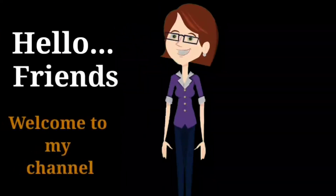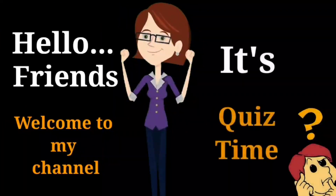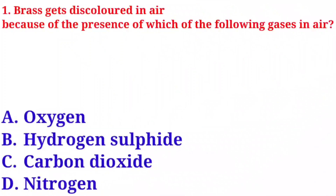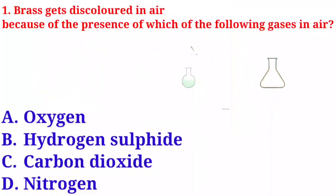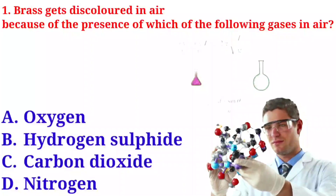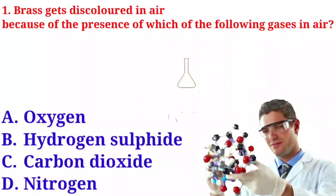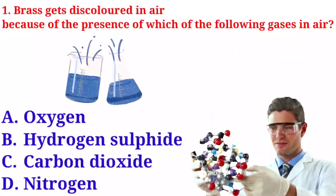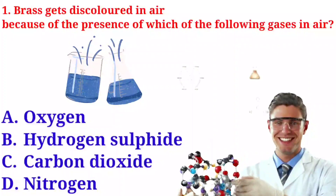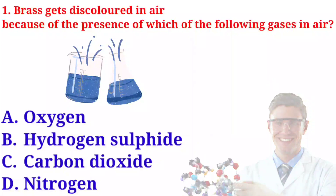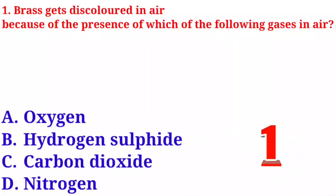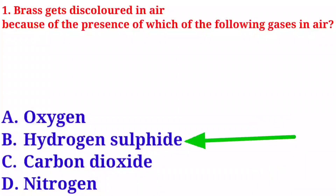Hello friends, welcome to my channel. It's quiz time — I hope you guys are doing well. Let's begin with the first question. Question number one: brass gets discolored in air because of the presence of which of the following gases in air? Option A: oxygen. Option B: hydrogen sulfide. Option C: carbon dioxide. Option D: nitrogen.